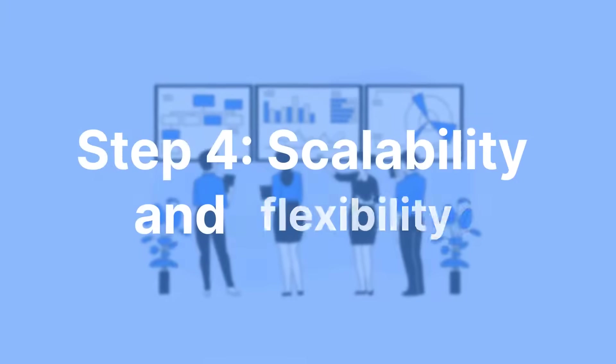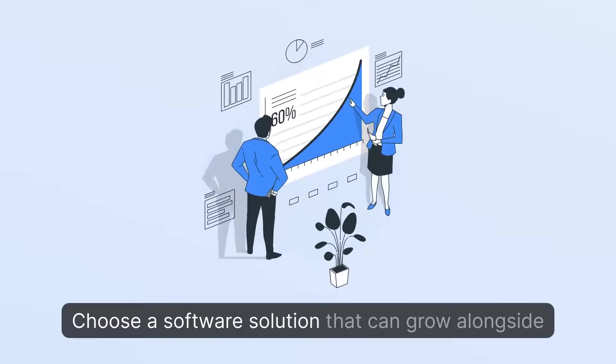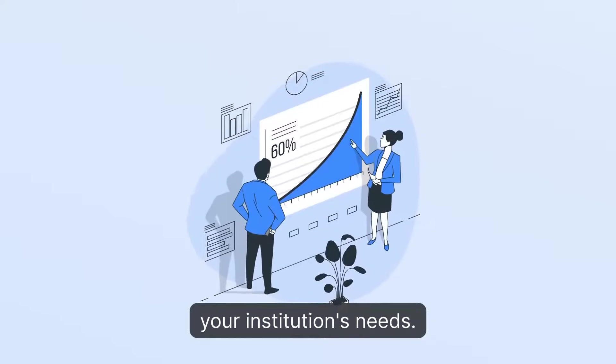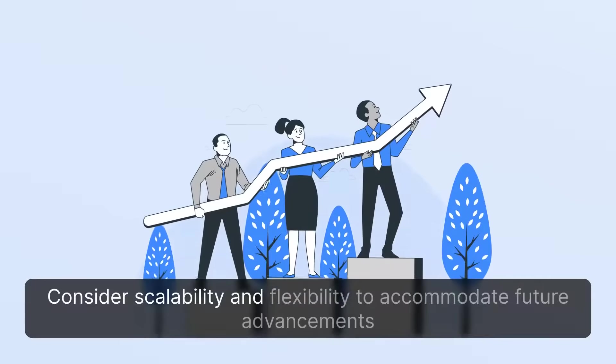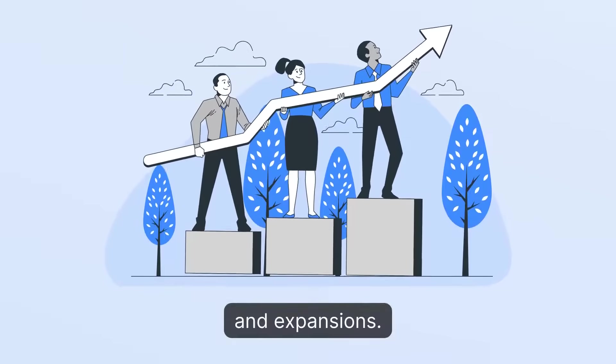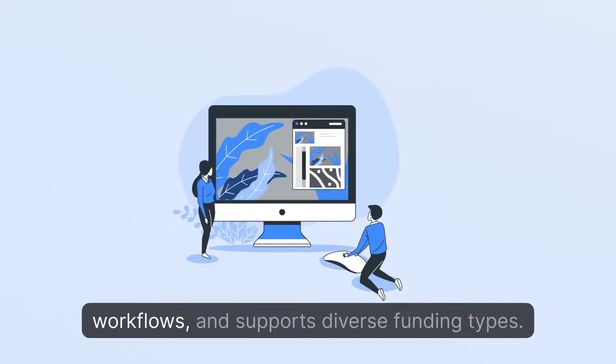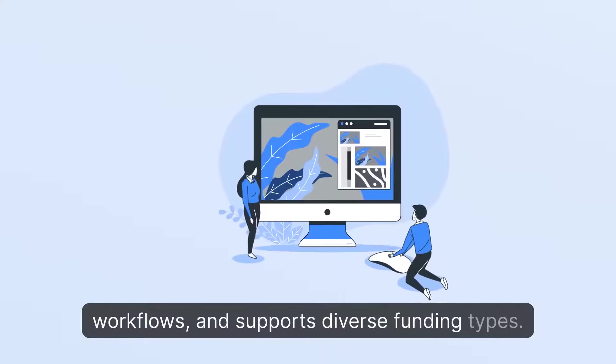Step 4. Scalability and Flexibility. Choose a software solution that can grow alongside your institution's needs. Consider scalability and flexibility to accommodate future advancements and expansions. Look for software that offers customization options, adaptable workflows, and supports diverse funding types.